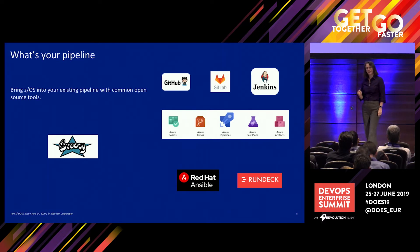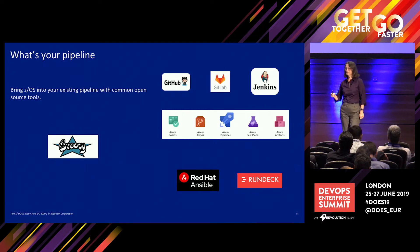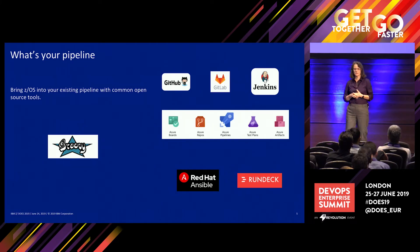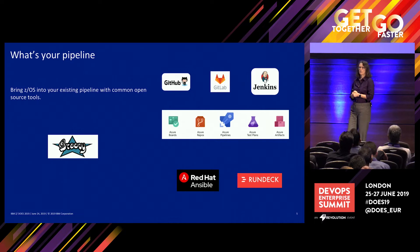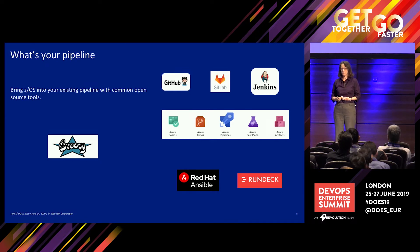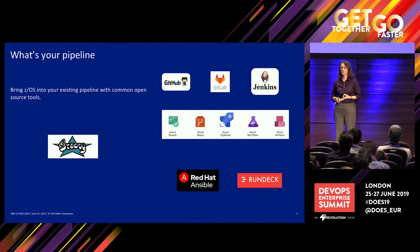ZOS traditionally did not allow you to take load modules off the system. Load modules — the program output, whatever you've compiled into a program — could not move off ZOS easily. We had to use special tools like XMIT to get it off the box. We've now provided capability to allow you to copy those off the machine without doing special processing and without losing any of the attributes. I can take that load module, copy it into the hierarchical file system, tar it up, and put it in Artifactory, Nexus, Azure Artifacts — now it sits alongside all the rest of the parts of the application.